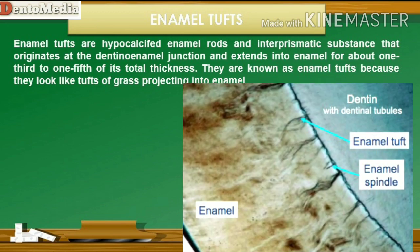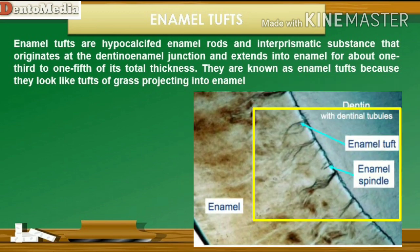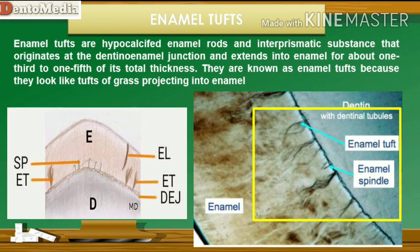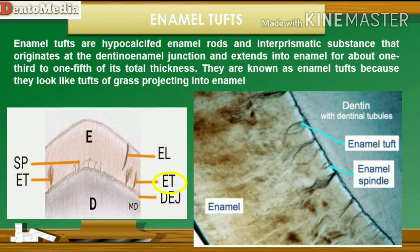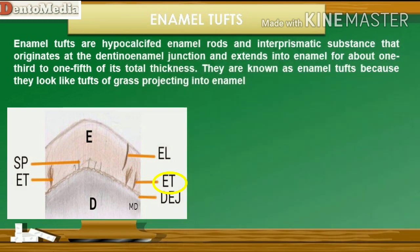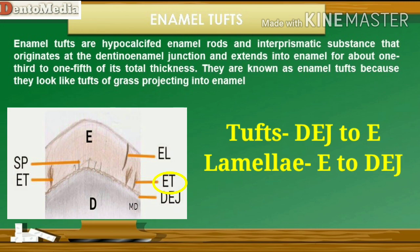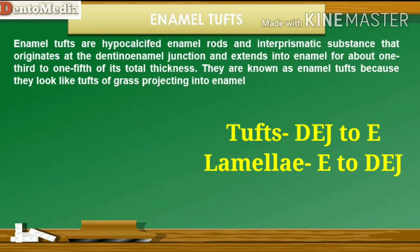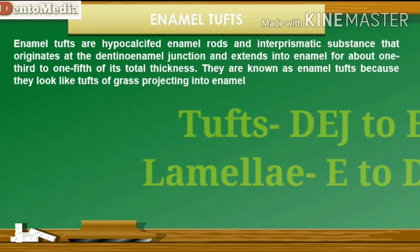Enamel tufts are hypocalcified enamel rods and interprismatic substance that originate at the dentino-enamel junction and extend into enamel for about one-third to one-fifth of its total thickness. Developmentally, they are formed due to the abrupt change in the direction of rods.